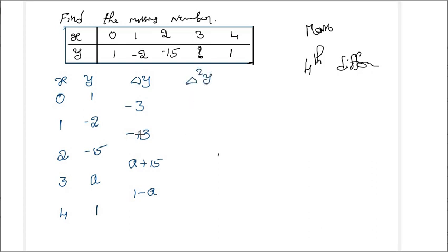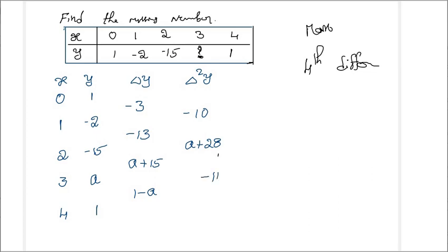Next, the second forward difference Δ²y: (-13+3) = -10, then (a+15) - (-13) = a+28, then (1-a) - (a+15) = -14 - 2a. Wait, let me recalculate: (-13+3) = -10; (a+15) - (minus 13) gives a+28; and (1-a) - (a+15) gives -14 minus 2a... so that term is -14.